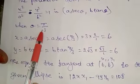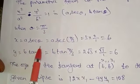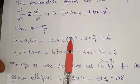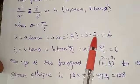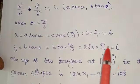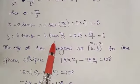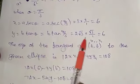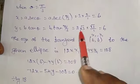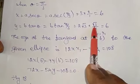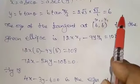When theta equals π/3, we find x and y. x equals a secθ equals 3 sec(π/3). Since sec(π/3) equals 2, x equals 3 times 2 equals 6. y equals b tanθ equals 2√3 times tan(π/3). Since tan(π/3) equals √3, y equals 2√3 times √3 equals 2 times 3 equals 6. So the point is (6, 6).